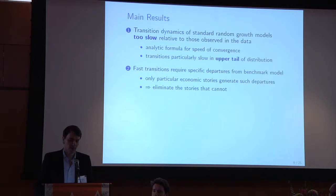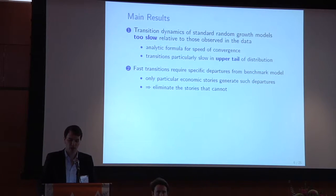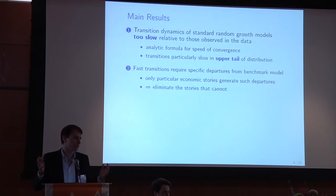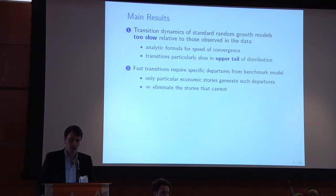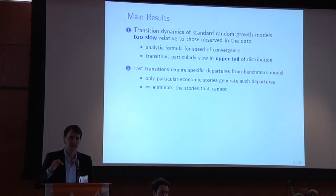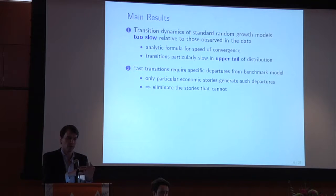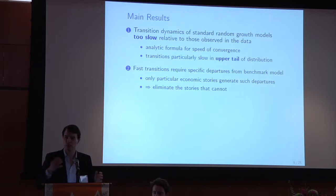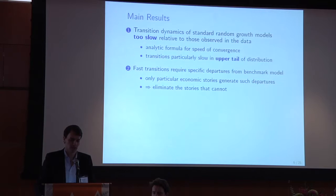Here are our main results. The first main result is that transition dynamics of the standard random growth model — which is really what all of the existing literature on top income and wealth inequality is built on — are an order of magnitude too slow relative to what you see in the data. We have a nice analytic formula for the speed of convergence of the distribution, and if you plug in reasonable parameter values, you get that the transition is very slow.